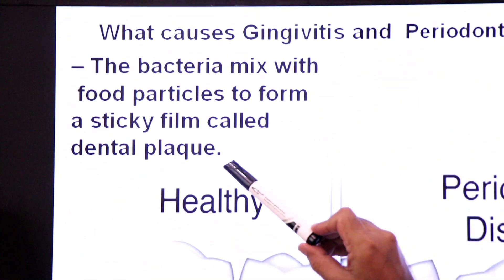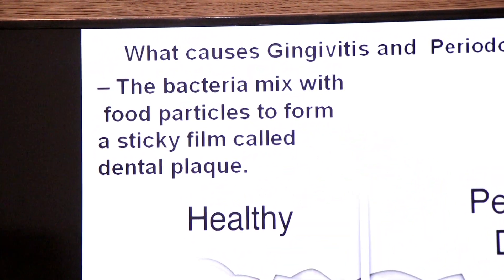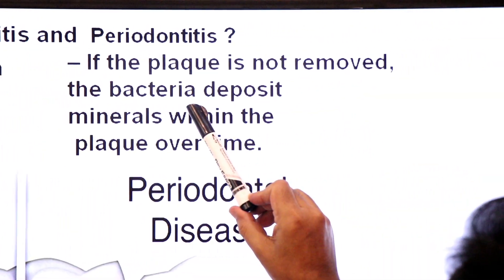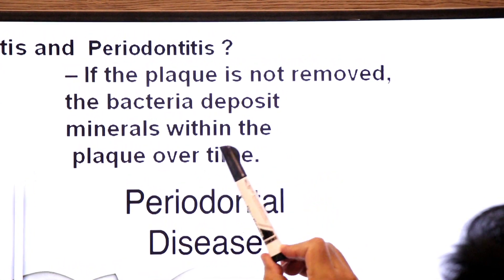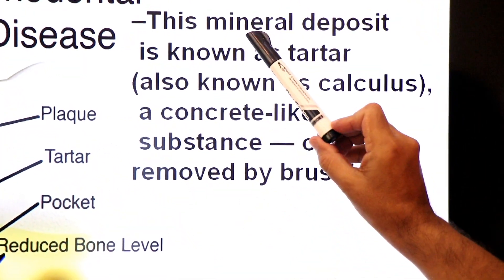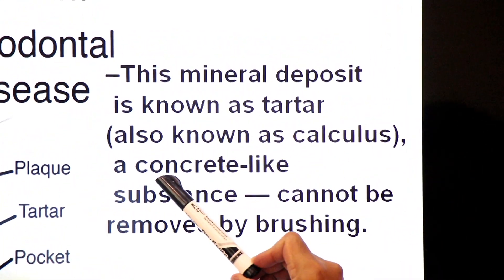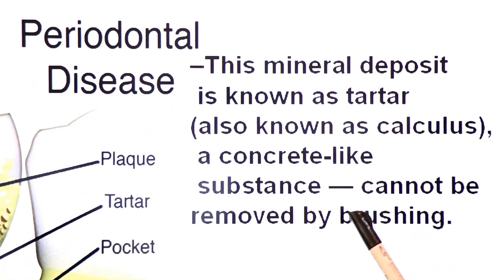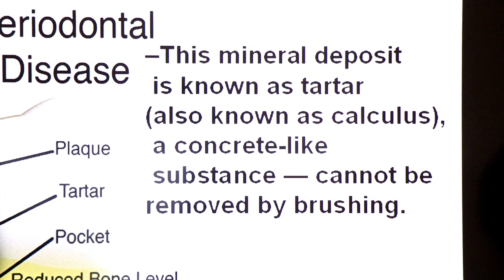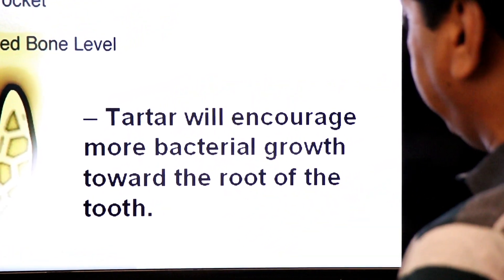The first cause is dental plaque — bacteria mixed with food particles form a sticky film that should be removed by brushing. If the plaque is not removed, bacteria deposit minerals within the plaque over time, turning it into tartar, also known as calculus — a concrete-like substance that cannot be removed by brushing. Tartar encourages more bacterial growth toward the root of the tooth.